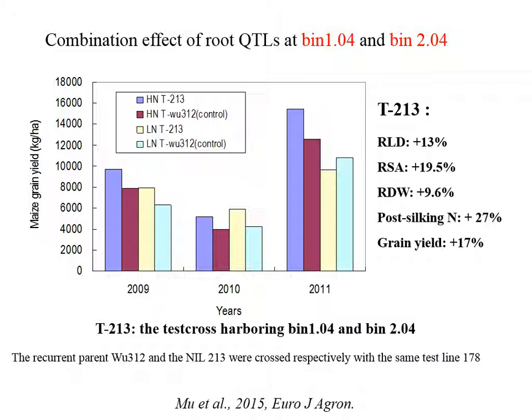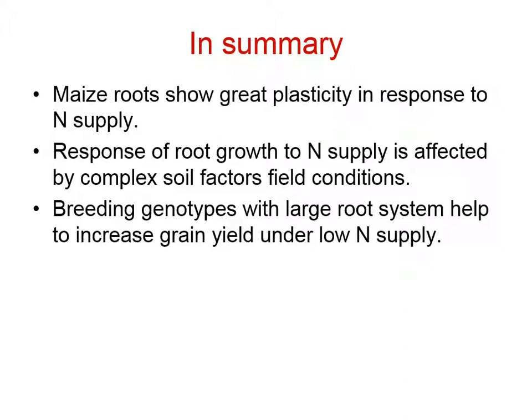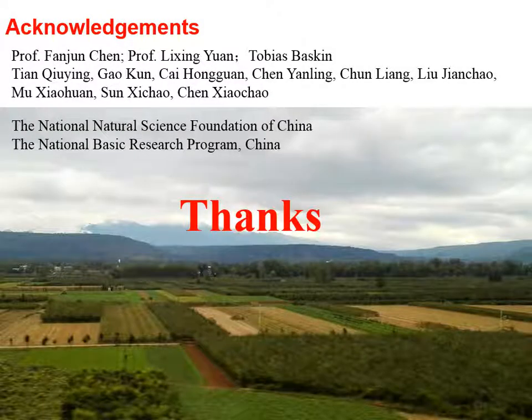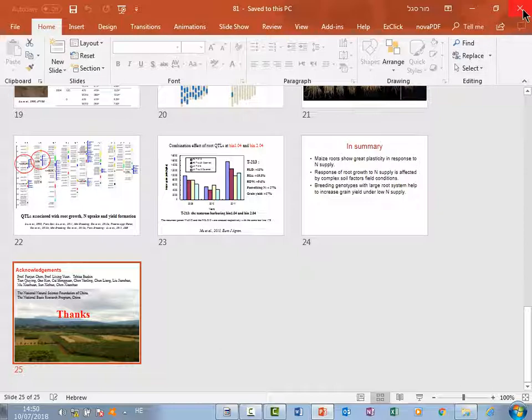On average we found an increase of root density by 30 percent, positive nitrogen uptake by 27 percent, and yield by 17 percent. In summary, maize roots show great plasticity in response to nitrogen supply; response of root growth to nitrogen is affected by complex soil characteristics in field conditions; and breeding genotypes with a large root system helps to increase grain yield under low nitrogen supply. I would like to thank my students for this work. Thank you very much.